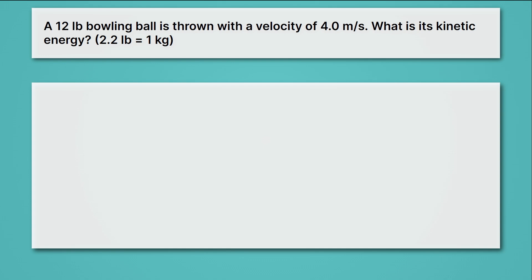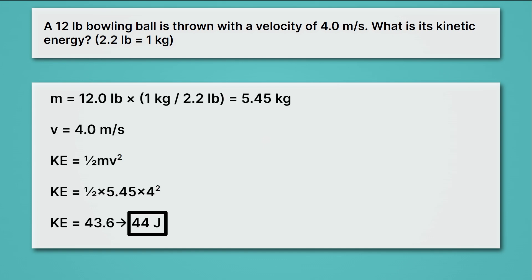Now it's your turn to practice. This problem says a 12 pound bowling ball is thrown with a velocity of 4 meters per second, slower than in our previous problem. What is its kinetic energy? Okay, pause the video and give this a try. Were you able to get it? The correct answer is 44 joules.